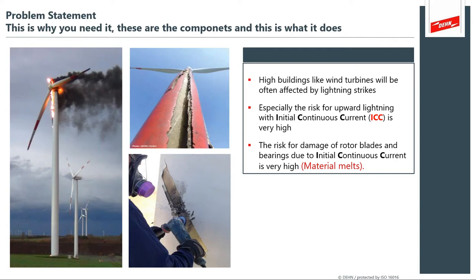I'd like to start with the problem statement, and we see this pretty much across the country. Wherever you see wind turbine blades aren't spinning and doing their job, there's probably some damage. This is why you need the Dane Detect system. The problem really is lightning strikes on wind turbines. We have a very valuable asset, and when it's not generating electricity, it isn't paying for itself. This is a really important aspect of lightning protection for wind turbines.